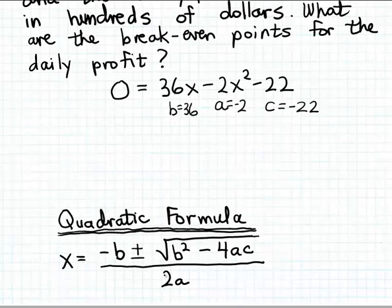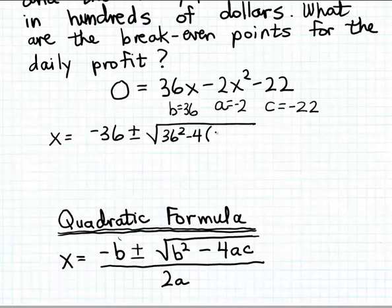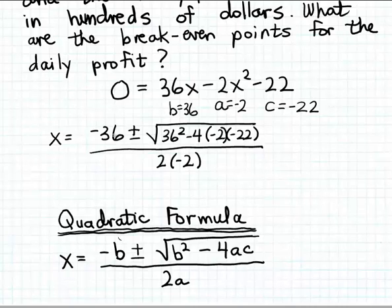We plug those three values into the quadratic formula to generate the solutions. The two break-even points are: minus 36, plus or minus the square root of 36 squared minus 4 times negative 2 times negative 22, all divided by 2 times negative 2. So one break-even point uses the plus sign and the other uses the minus sign, both divided by minus 4.